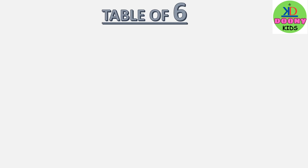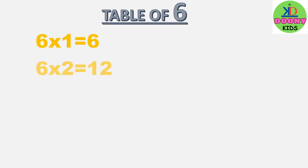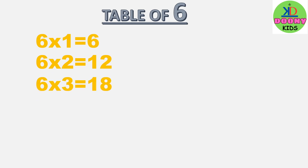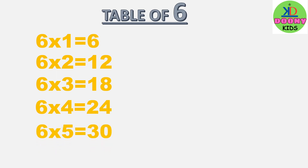Table of 6. 6 ones are 6, 6 twos are 12, 6 threes are 18, 6 fours are 24, 6 fives are 30.